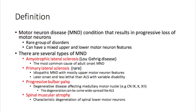You can also have progressive bulbar palsy, which is a degenerative disease affecting medullary motor nuclei. It predominantly affects cranial nerves 9, 10 and 12, and the degeneration can eventually become widespread like ALS. Finally, spinal muscular atrophy is another subtype characterized by degeneration of the spinal lower motor neurons.